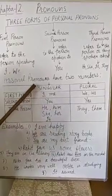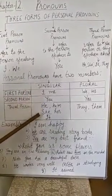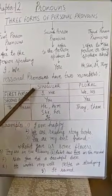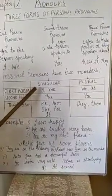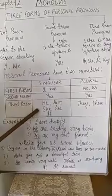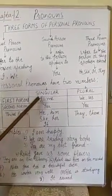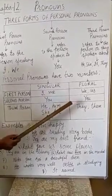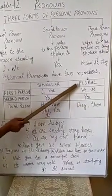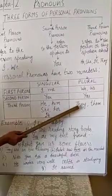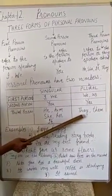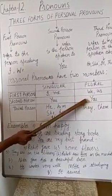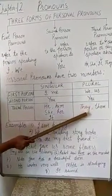Pronouns of three persons in singular form are used in place of one noun. And pronouns of three persons in plural form are used in place of more than one noun, or for multiple nouns.